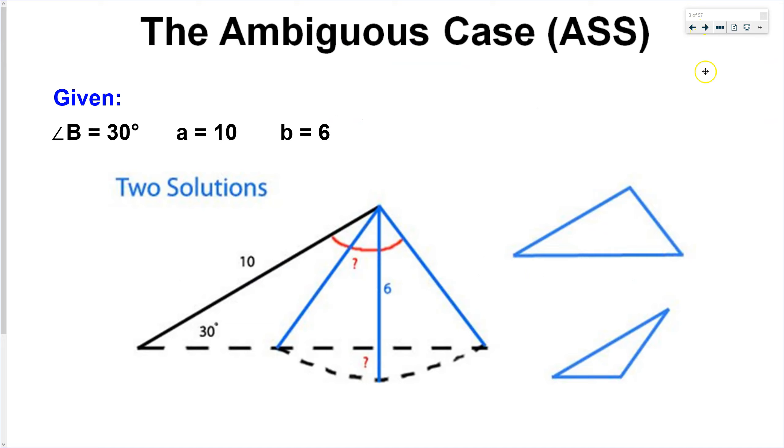The reason that a case can be ambiguous with the given information, suppose we were given these three pieces of information, an angle, a side, and the opposing side to the angle. So I'm in this situation of two consecutive sides and an angle are given to me.